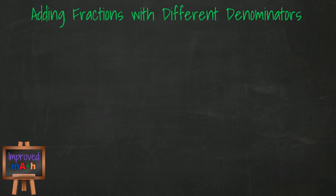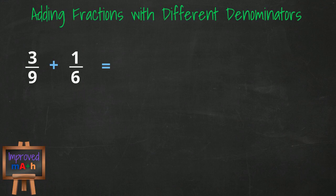But what do you do if you're adding fractions with different denominators? There are a few more steps involved in that process, so let's take one example and go over that now. Let's take the fractions 3 over 9 plus 1 over 6. Adding fractions is simple when you have the same denominator, but we don't have that here. But can we get them to have the same denominator? Of course we can, and we do that by creating equivalent fractions.